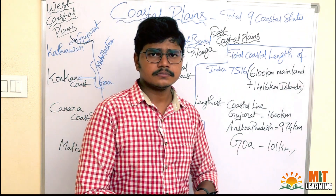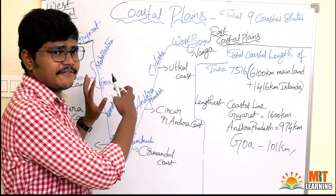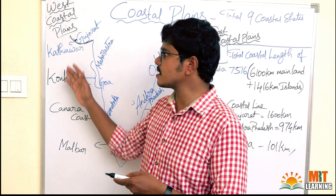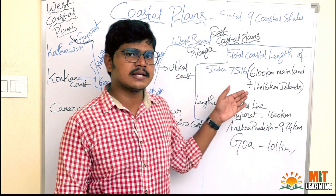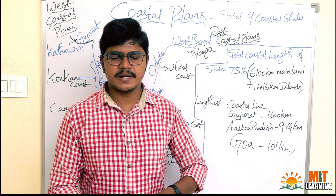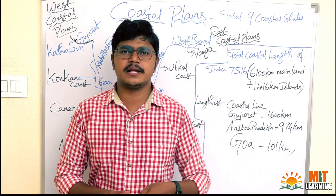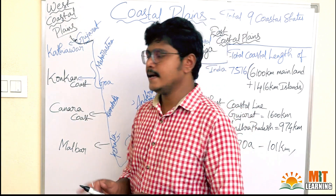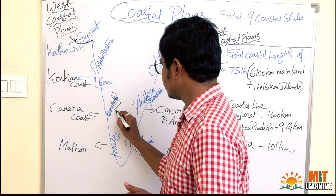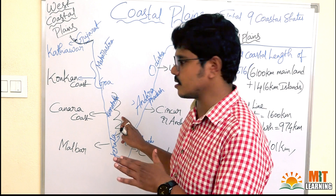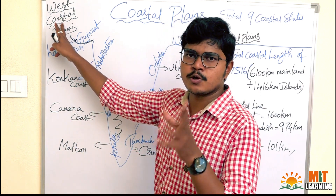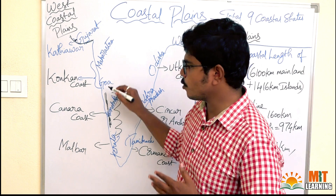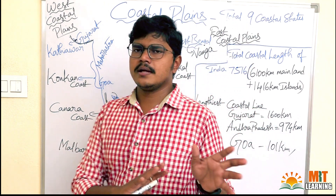Now let's understand the difference between the western coastal plain and the eastern coastal plain. The western coastal plains are located between the Western Ghats and the Arabian Sea. The eastern coastal plains are located between the Eastern Ghats and the Bay of Bengal.